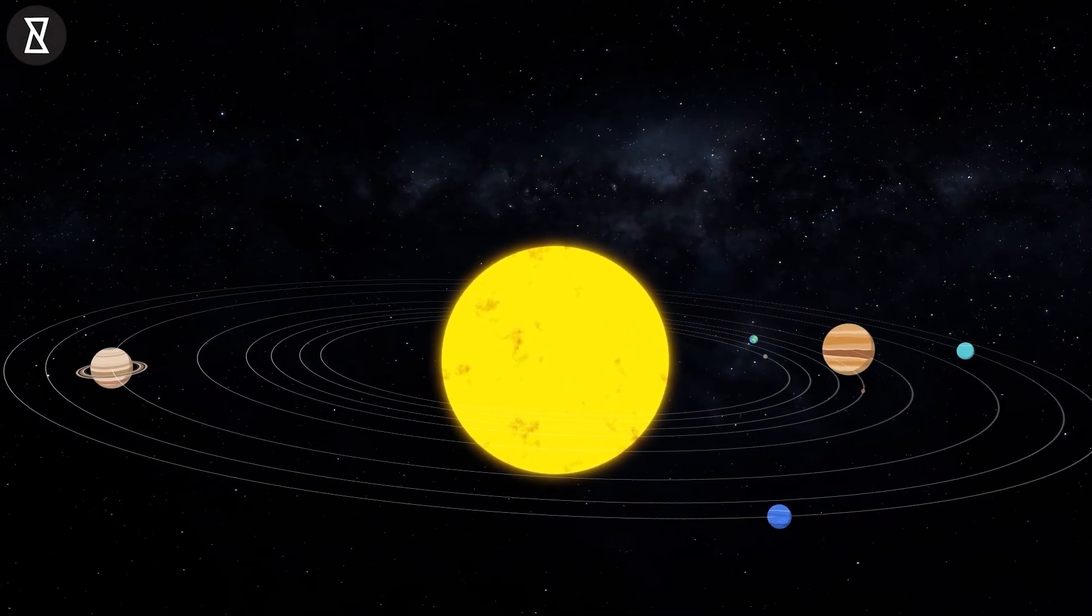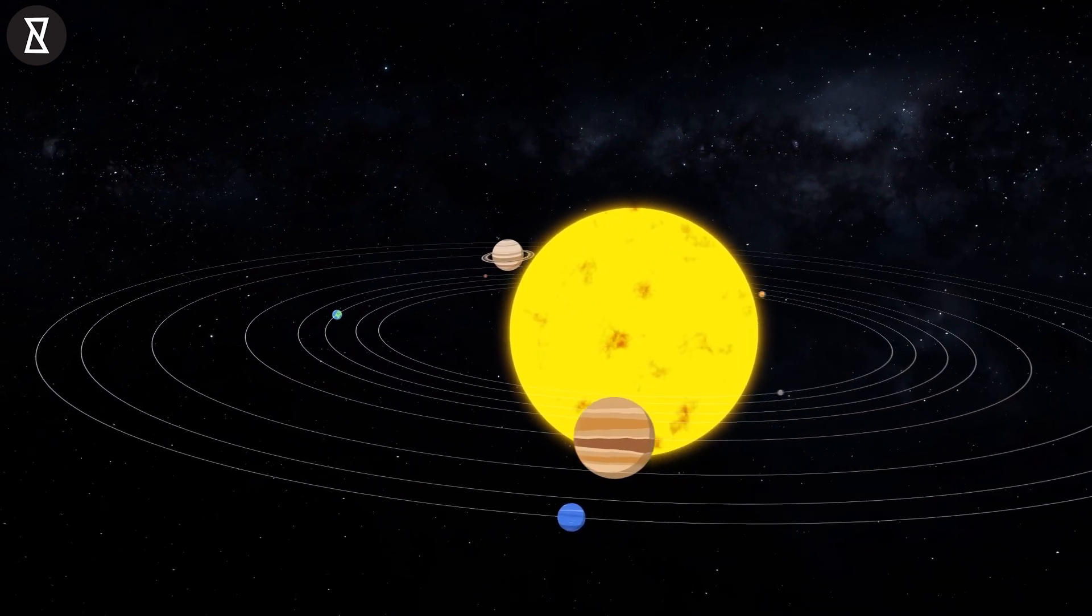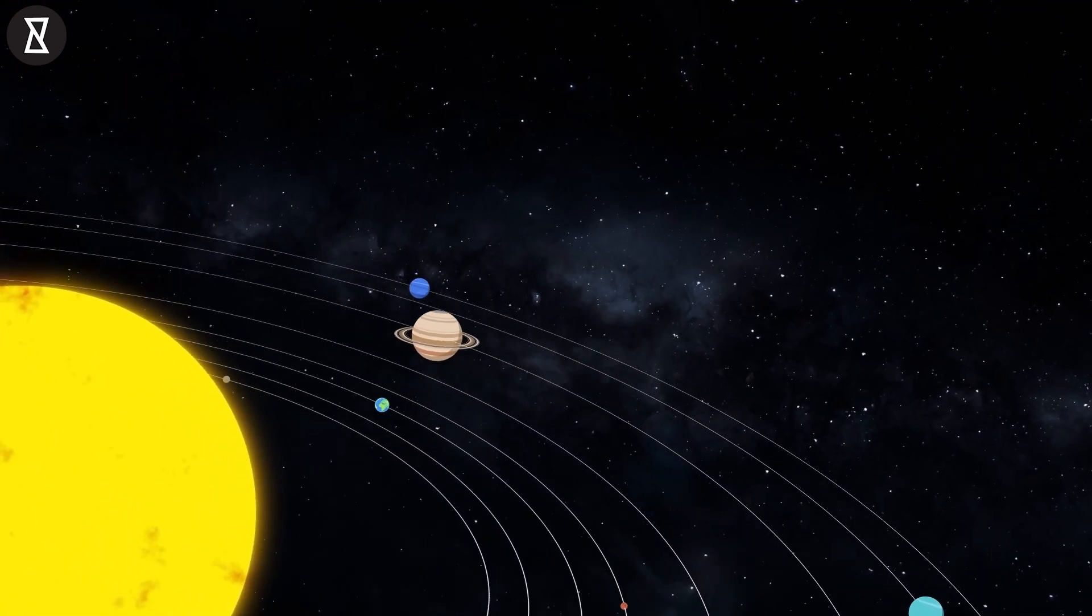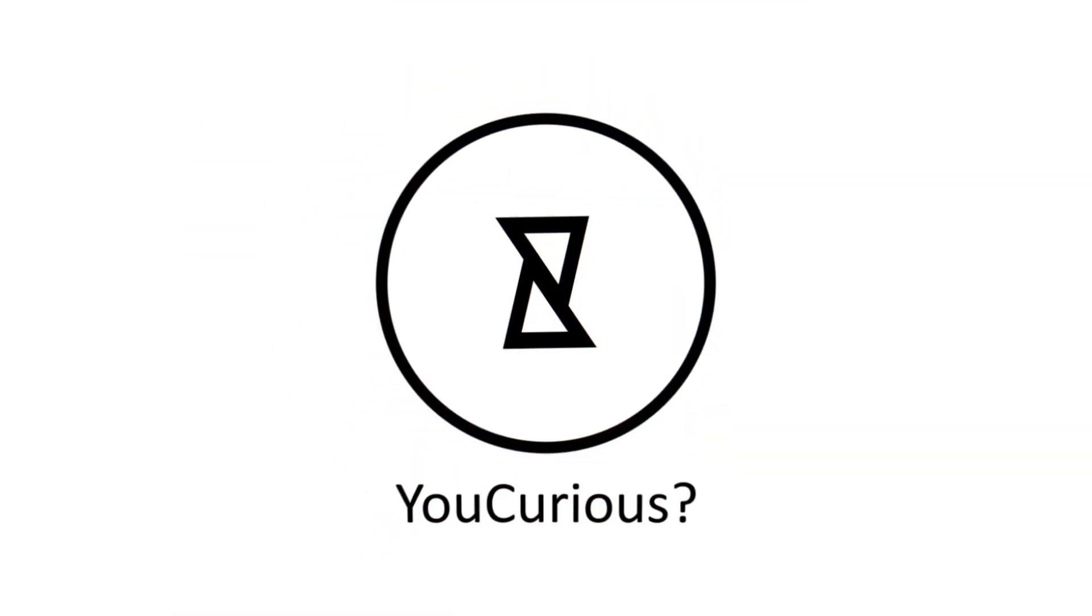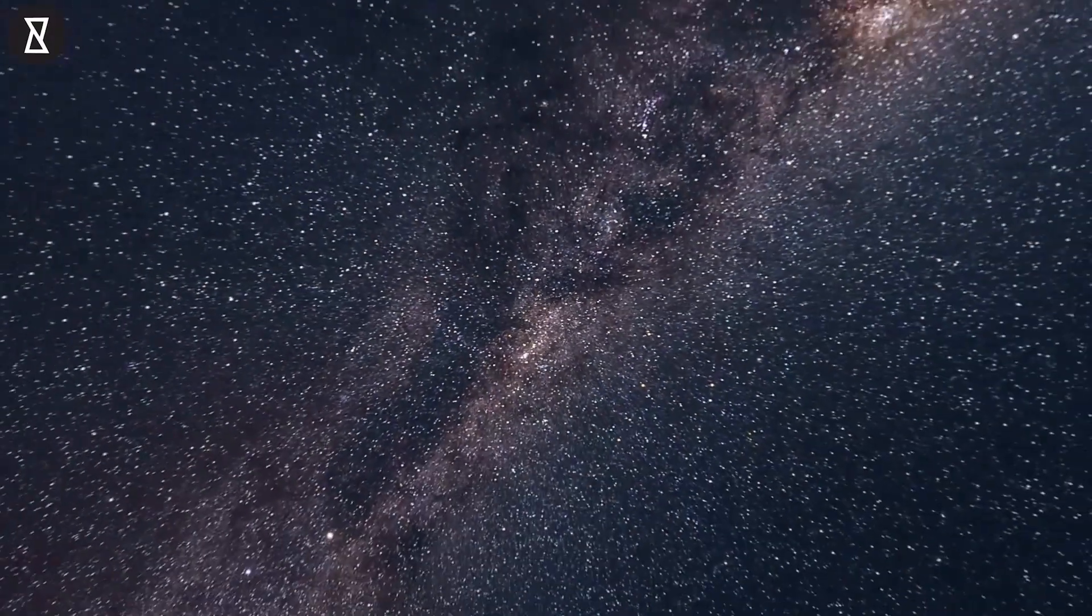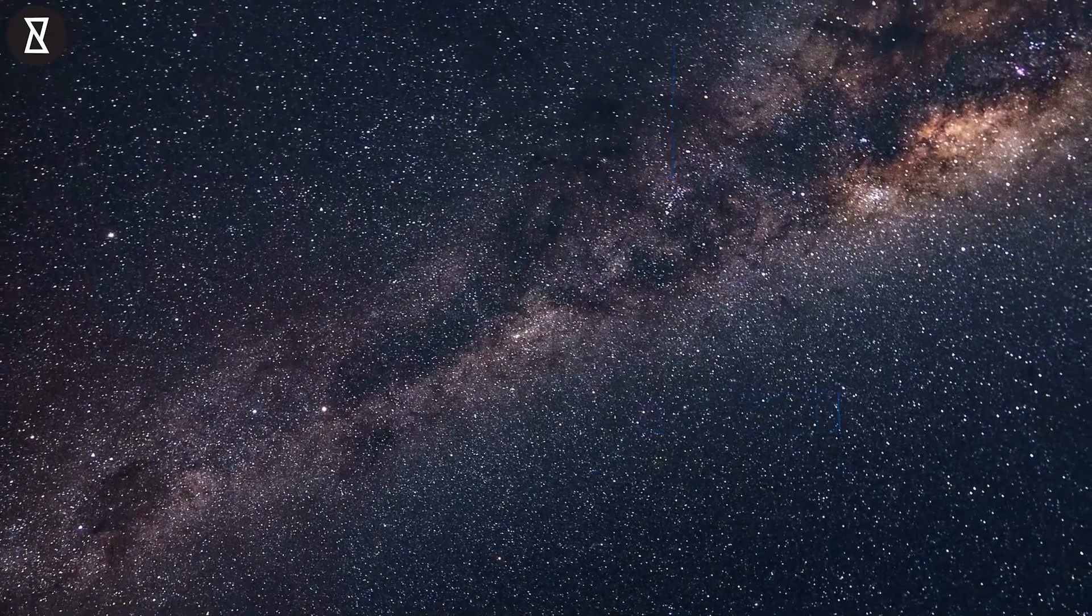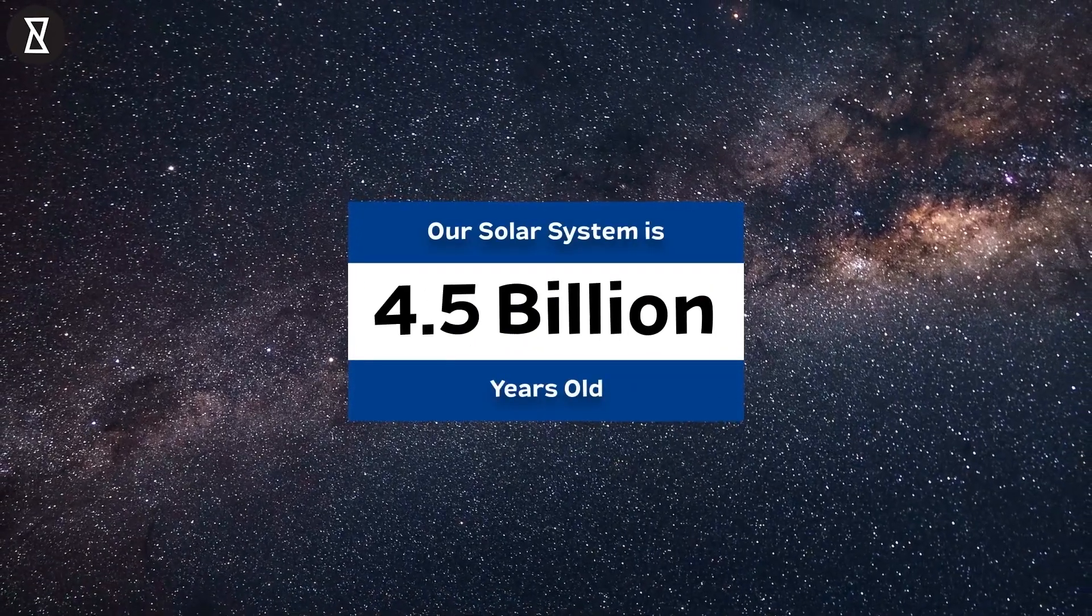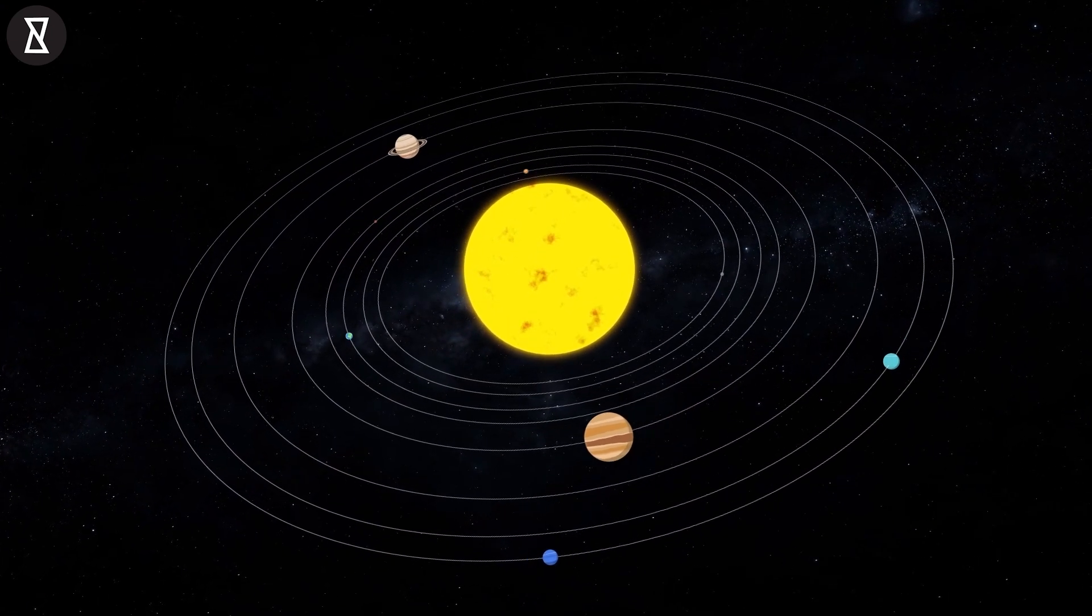Our solar system is a bizarre place, made up of the sun and everything else that orbits around it. Scientists have discovered and named eight planets in our solar system. Did you know that our solar system is one of over 500 solar systems in the entire Milky Way galaxy? Over 4.5 billion years old. So, are you curious to know more about our planets in this solar system?